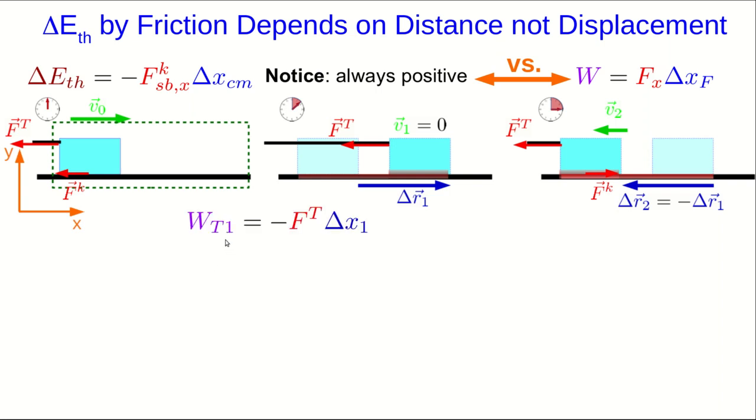So the first piece from the initial place to what I've called one here, the work is the x component of that tension, which is negative the magnitude of the tension, times delta x1, which is the x component of this displacement vector.